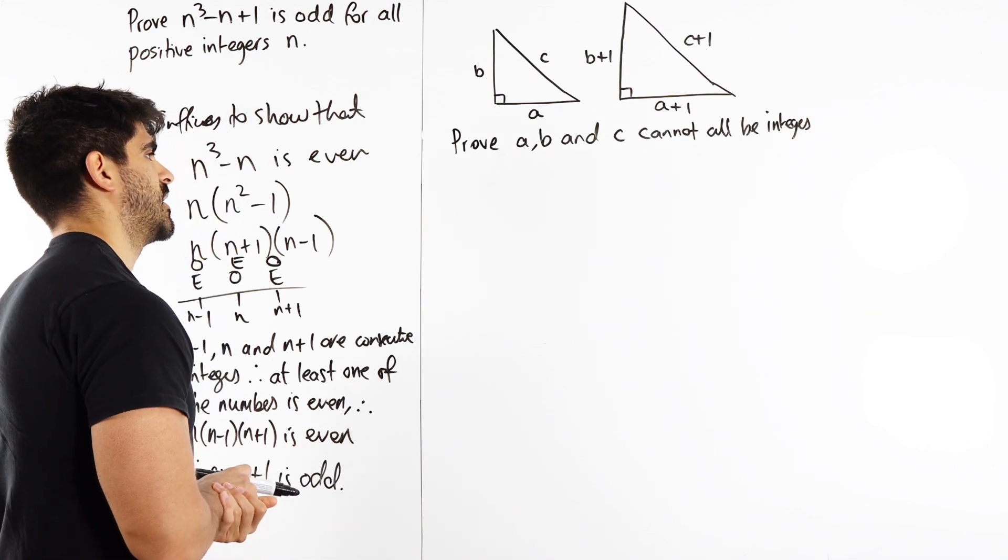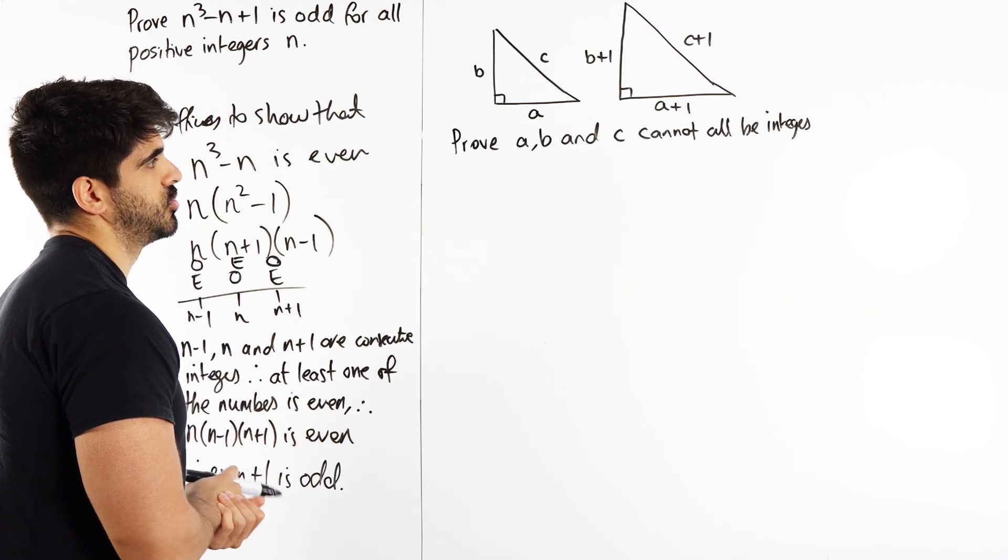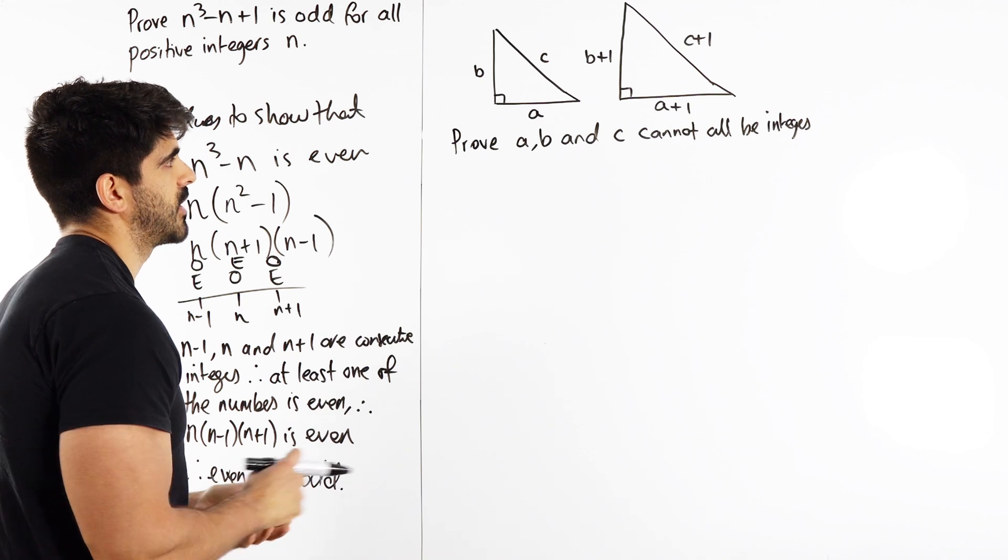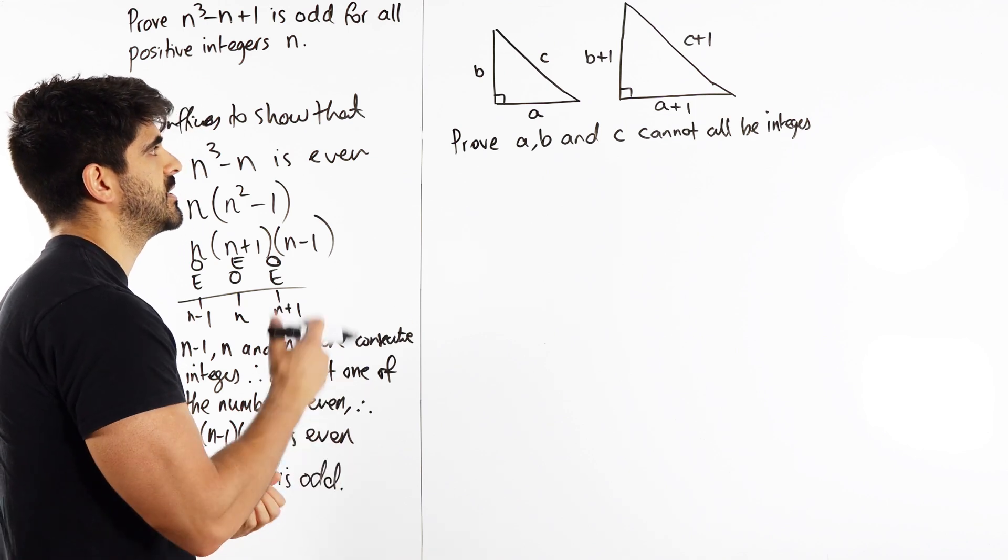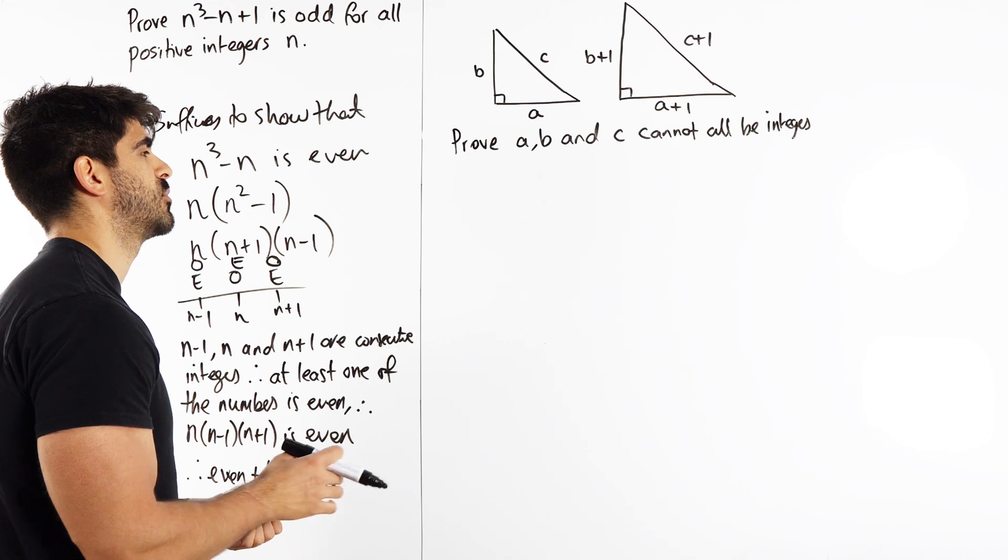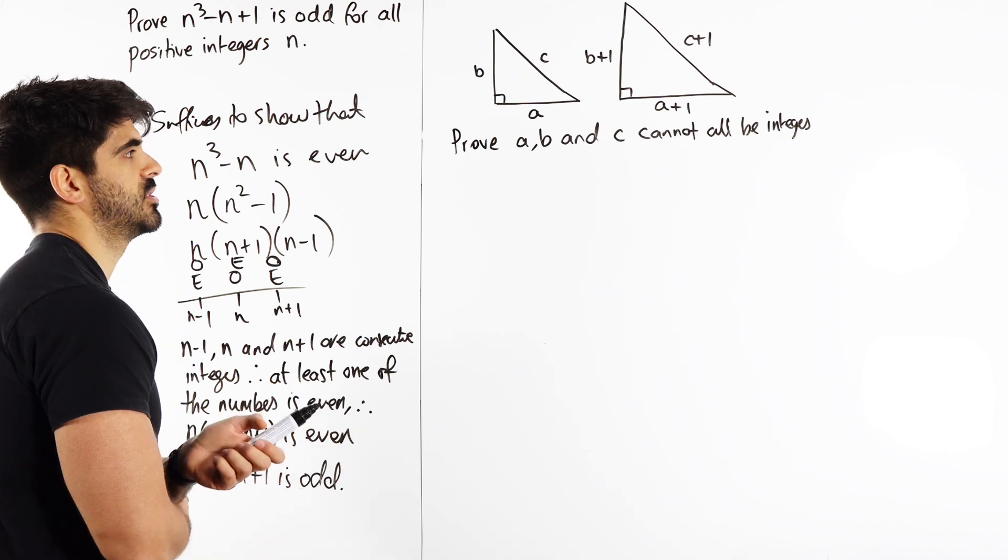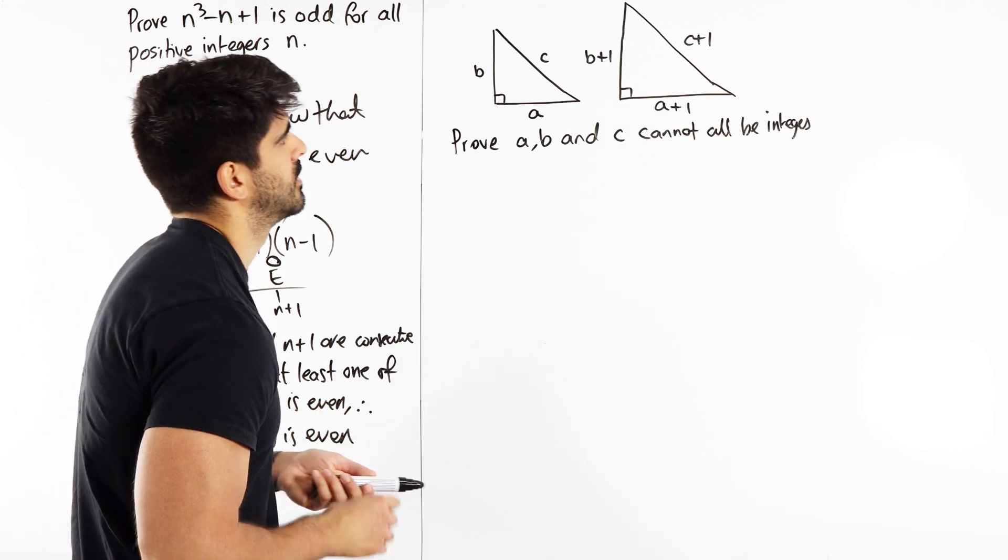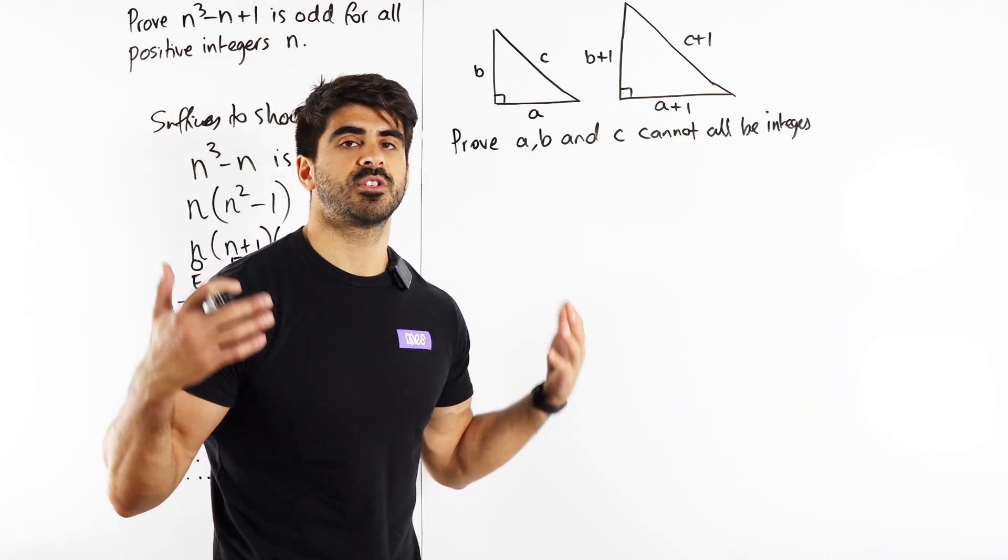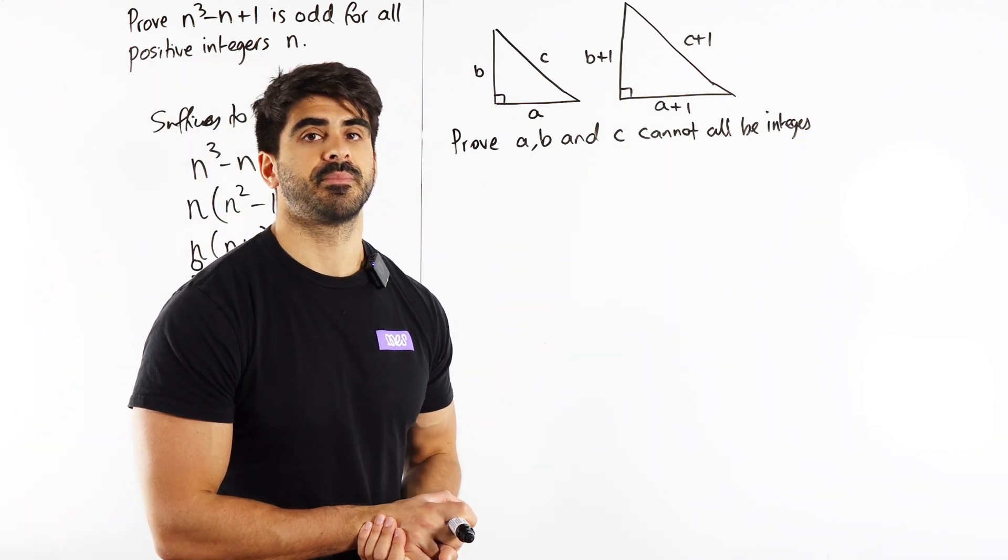So the next one was a past GCSE question that students struggled with. I have two right angle triangles. I have A, B, C on one of them. A + 1, B + 1, C + 1 on the other. It's saying prove that A, B and C cannot all be integers. Well, when you see a right angle triangle with three lengths, what should you immediately be thinking about? Pythagoras.